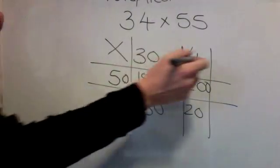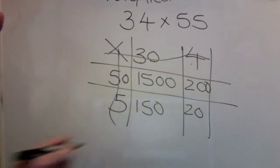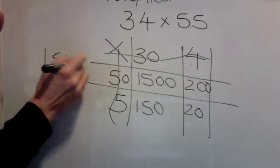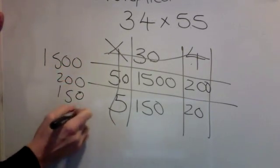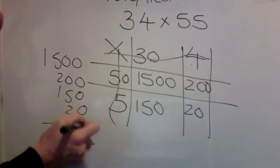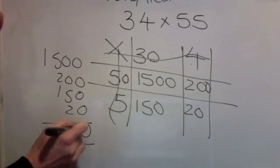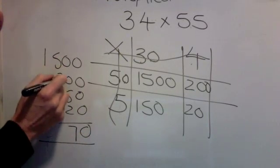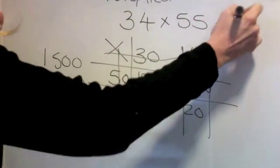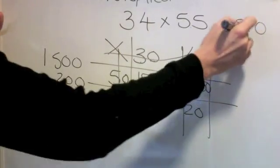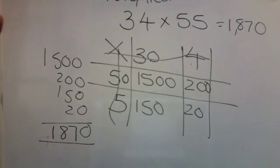Add the answers together. 1,500, 200, 150 and 20. Nothing, 7, 5, 6, 7, 8, 1. The answer is 1,870.